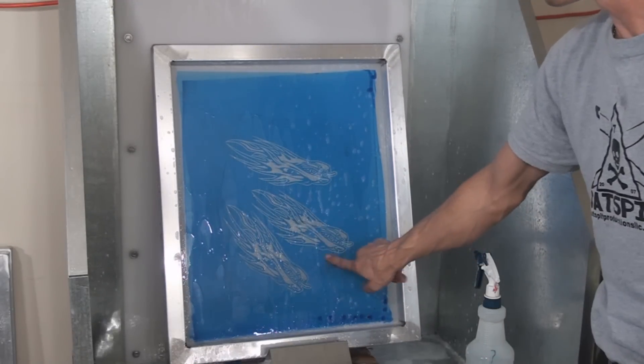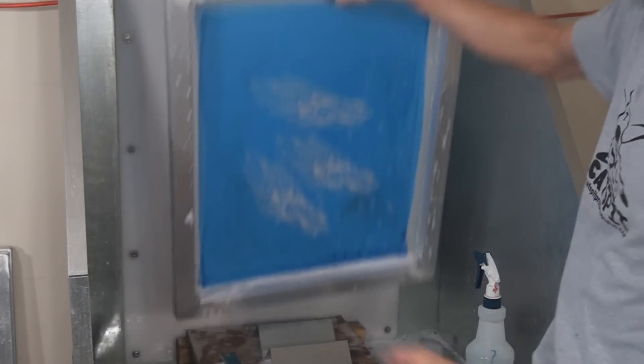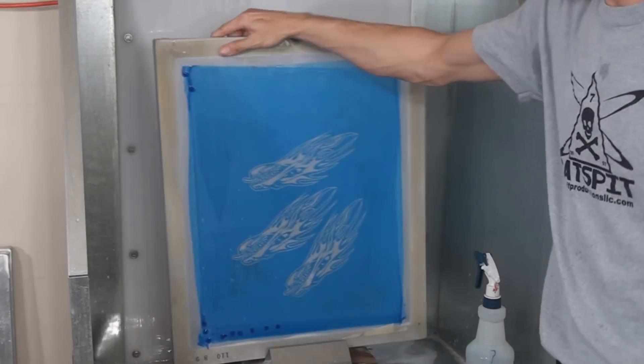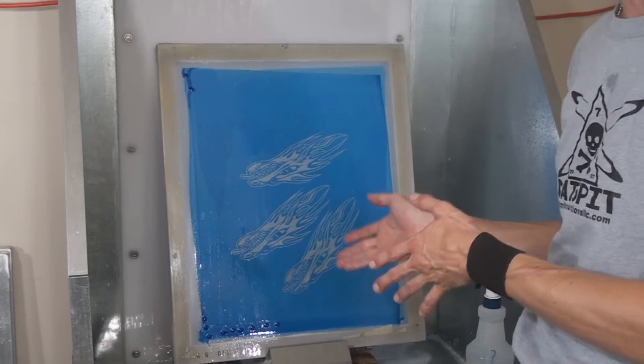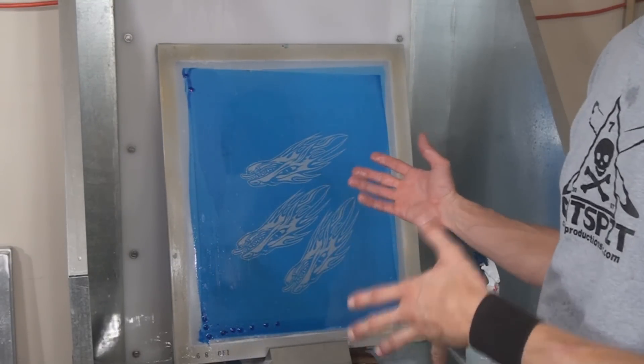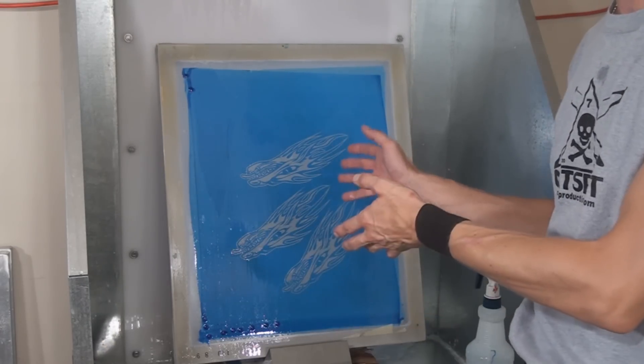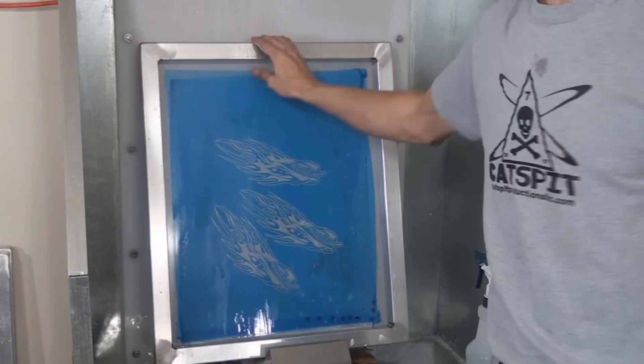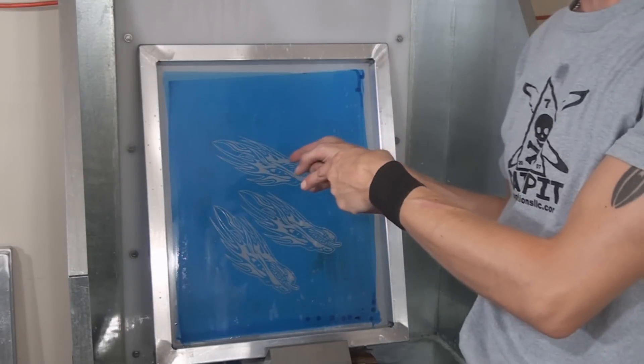Because you can see there's a little bit of ink residue left here and there, but because I would go directly to reclaiming now, I've removed most of the ink, pretty much all the ink, and now the emulsion remover can get to the emulsion and do its job. So, that's the way I would do it if I were about to reclaim the screen.